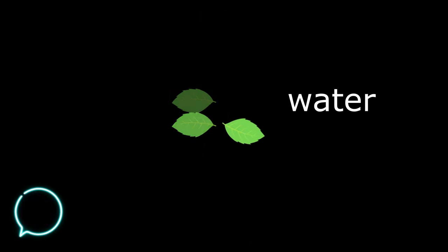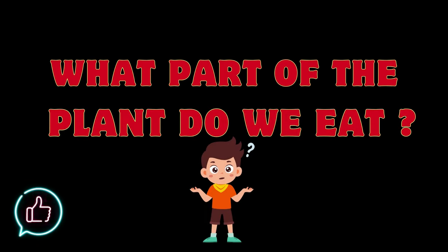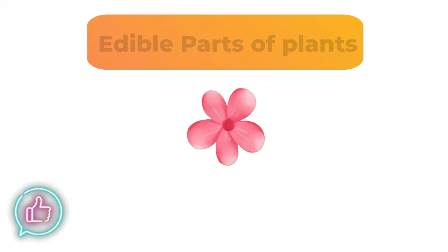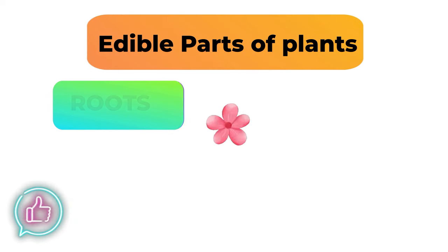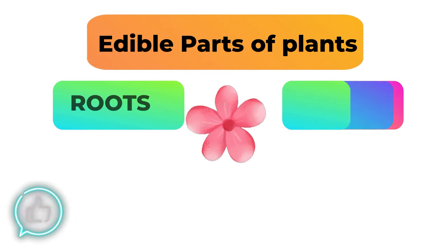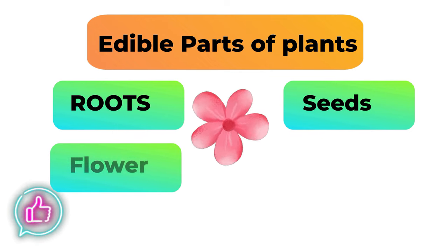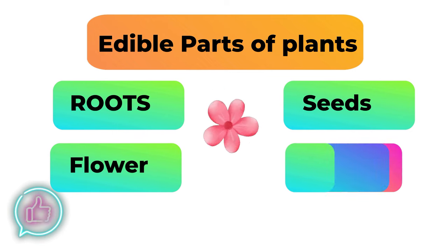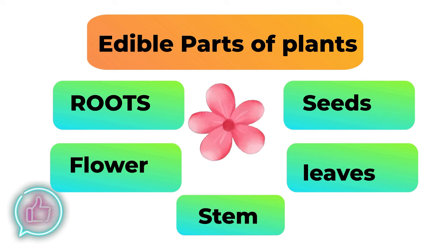What part of the plant do we eat? We can eat different parts of plants: roots, seeds, flower, leaves, and stem.